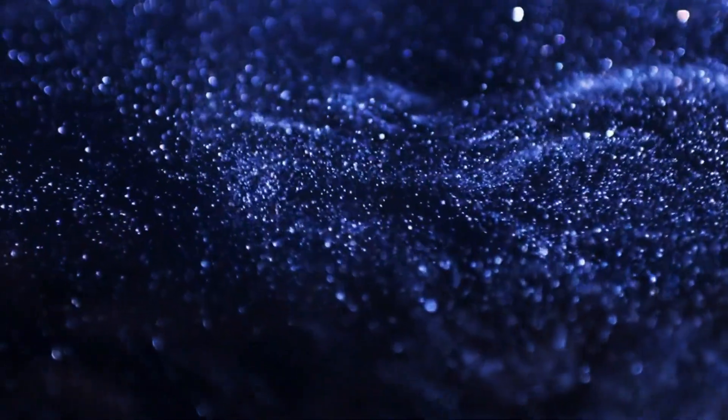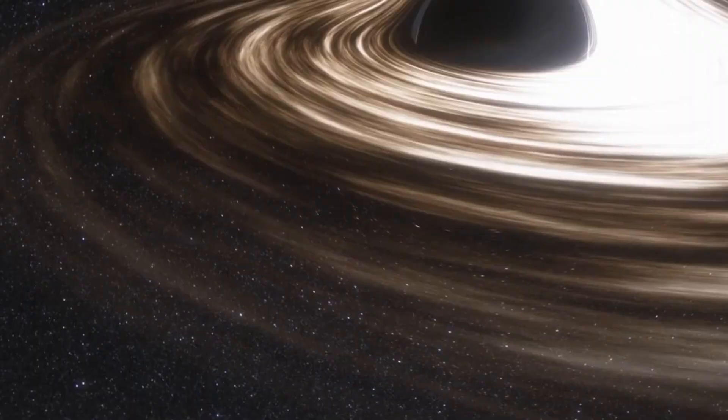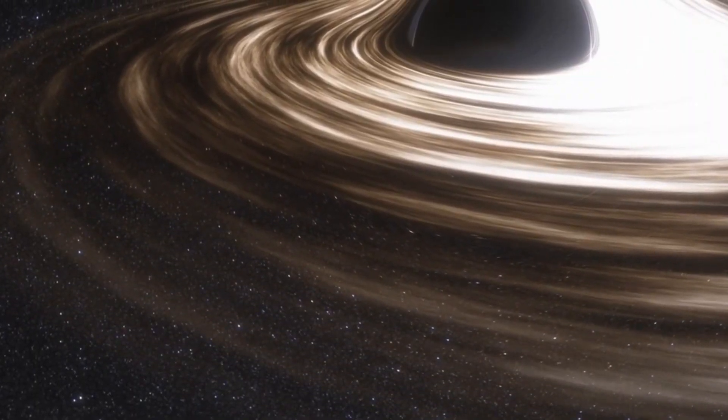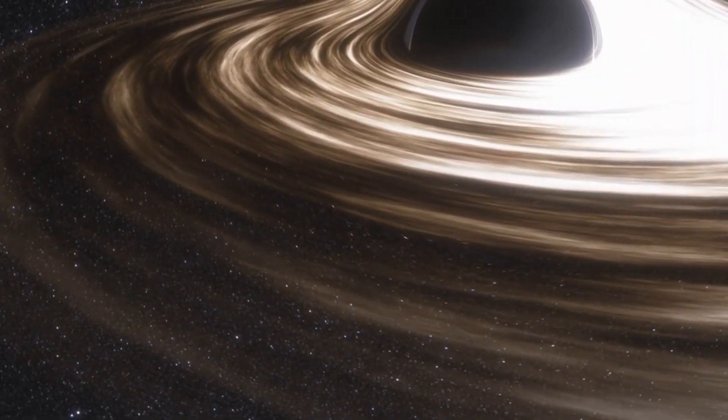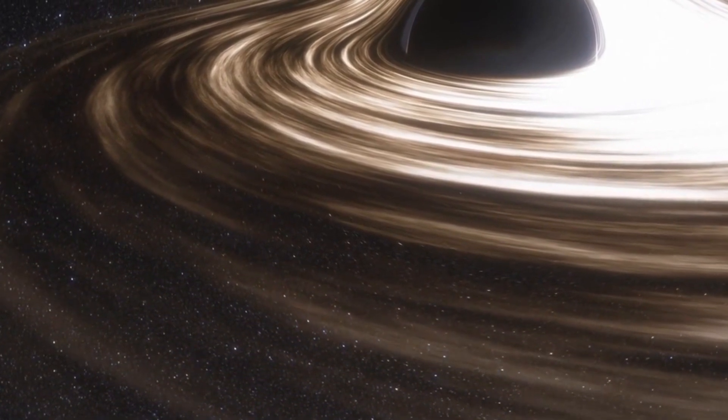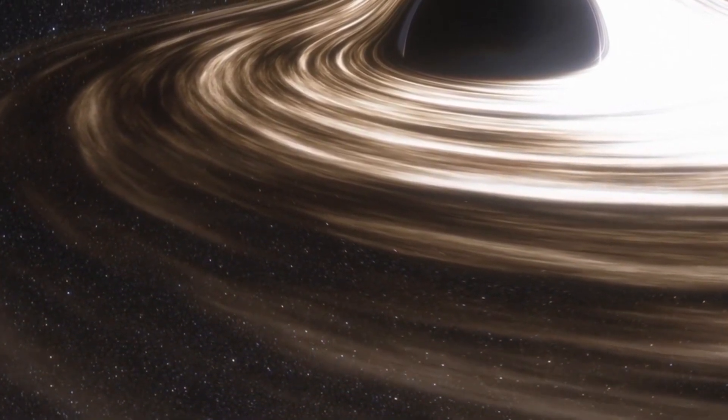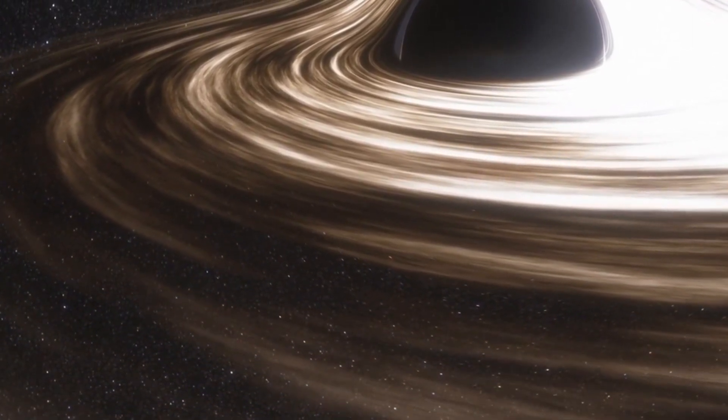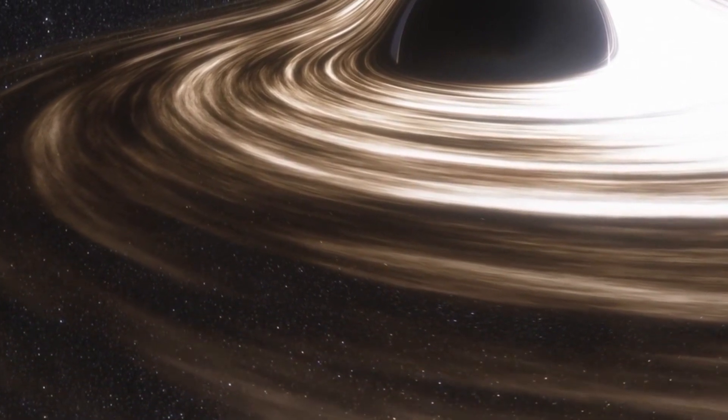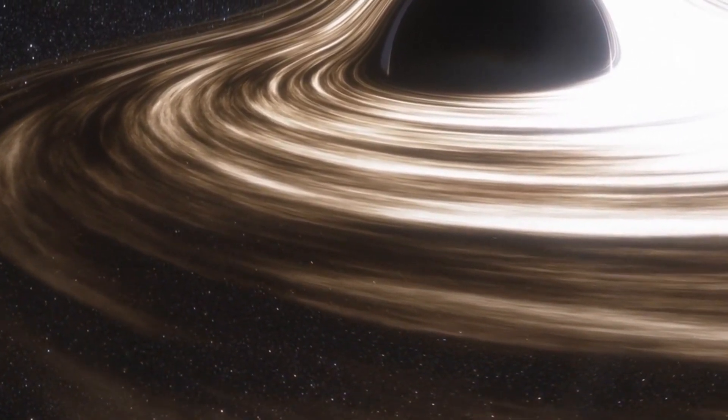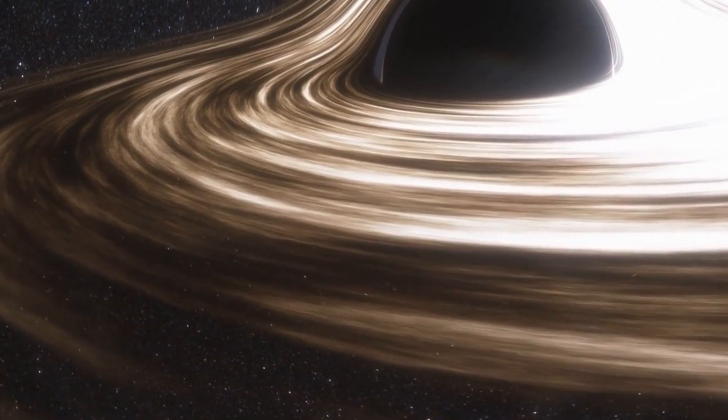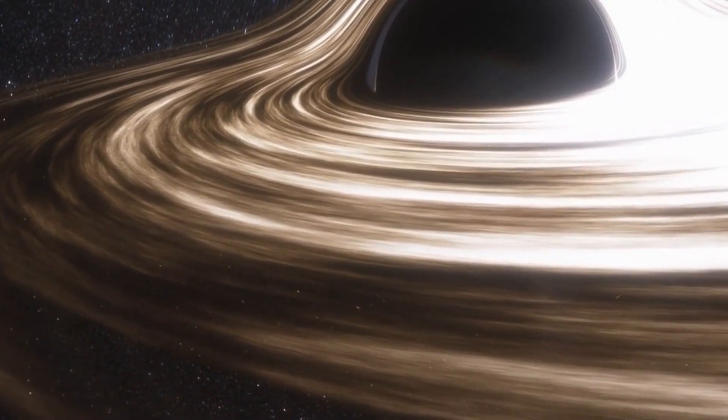Another consequence of having an ergosphere is that there are regions where stable circular orbits around a rotating black hole are possible. These orbits are called prograde orbits if they go in the same direction as the spin of the black hole, and retrograde orbits if they go in the opposite direction. Prograde orbits can exist closer to the event horizon than retrograde orbits because they benefit from frame dragging while retrograde orbits are opposed by it.